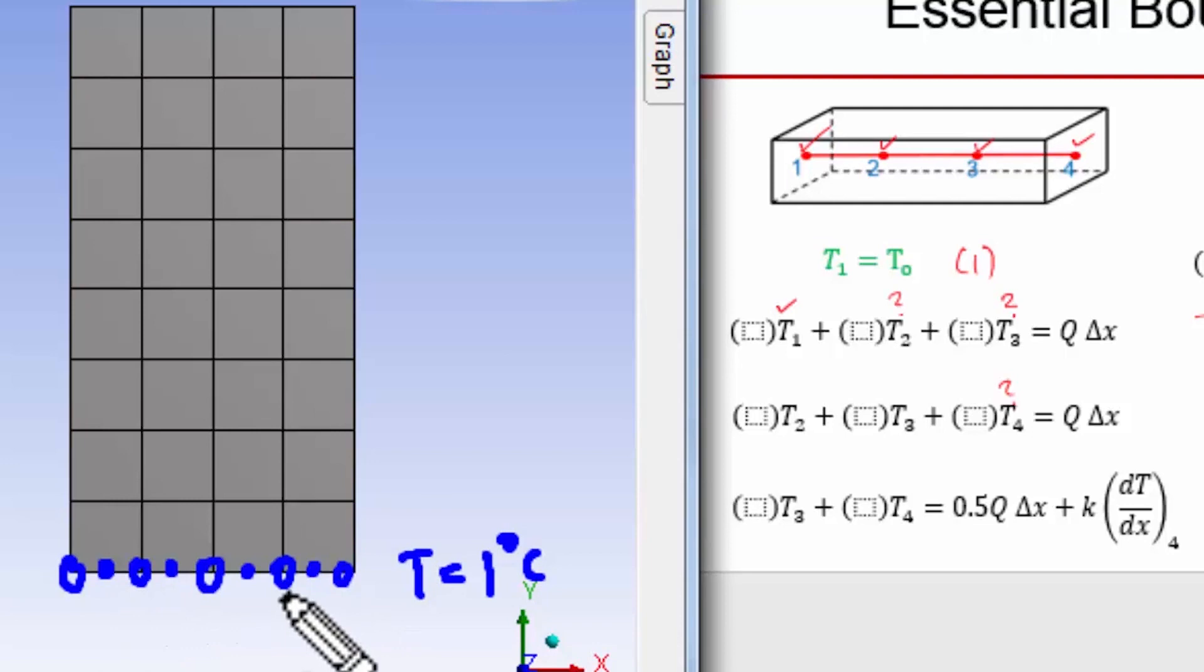Then it needs to generate the algebraic equations at all the other nodes. At an interior node like that, the algebraic equation will connect the nodes from all these elements. The right-hand side comes from the heat generation, but we haven't turned on heat generation here, so the right-hand side for those algebraic equations will be zero.